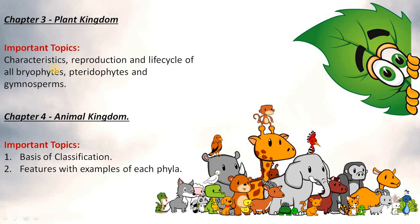Important topics of Chapter 3 Plant Kingdom are characteristics, reproduction and life cycle of all bryophytes, pteridophytes and gymnosperms. Important topics of Chapter 4 Animal Kingdom are basis of classification and features of each phylum with examples.